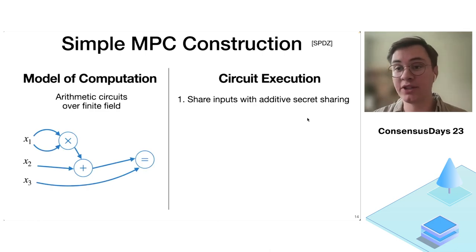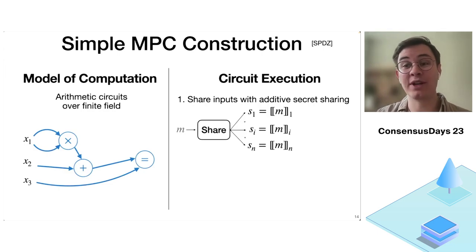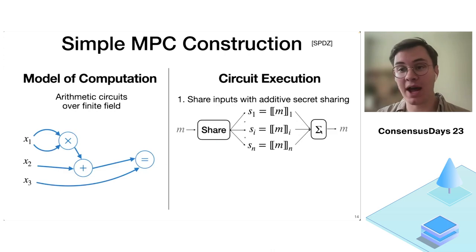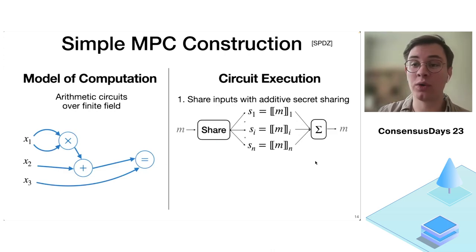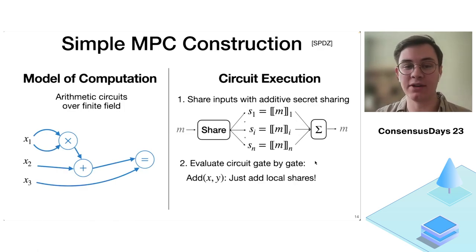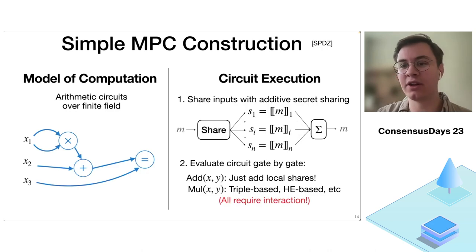To actually execute the circuit, I first share my inputs with additive secret sharing. In additive secret sharing, I take my input and split it into multiple shares that don't leak anything individually about the original input, but if you have all of them, you can reconstruct it. Holding just shares, the parties within the MPC can compute the circuit gate by gate. For addition gates, you can just add your local shares together. For multiplication, there's some interaction involved and heavier cryptography, but you can also do this.